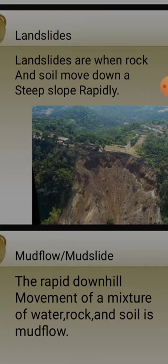Why do these landslides occur? Due to deforestation, there is sudden rapid mass movement. Rocks and heaps of rock and soil move downwards towards the steep slope rapidly. If there is any village or settlement there, naturally there will be destruction - they will be destroyed by this mudslide.